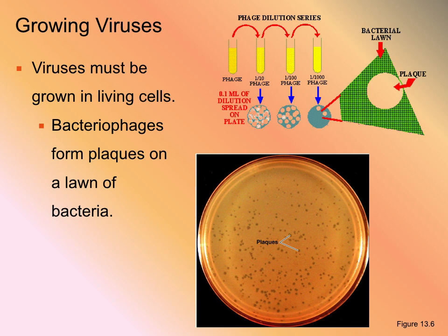In order to study or use viruses, we have to be able to grow them. But viruses don't grow on their own because they are acellular — not living. So we have to grow a cell culture and then use that cell culture for viral replication. Bacteriophages are grown in bacteria on a lawn of bacteria. In this picture you can see what are called plaques — areas where bacteria have died due to phage infection.